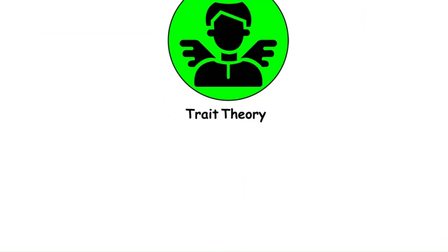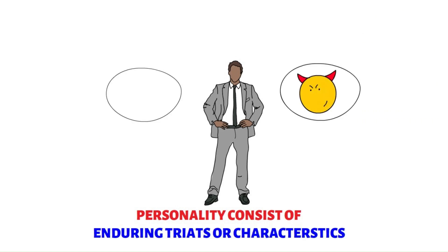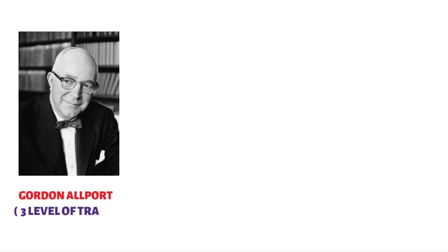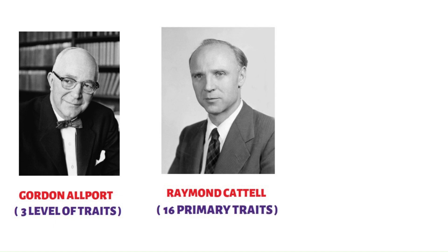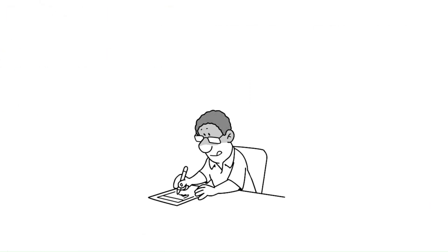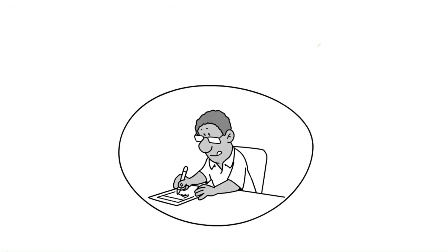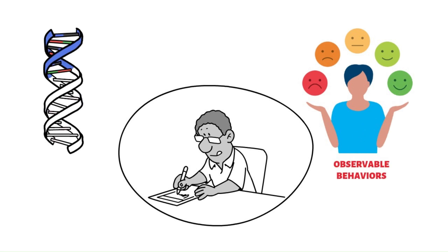Trait Theory proposes that personality consists of enduring traits or characteristics that influence behavior. Gordon Allport identified three levels of traits, Raymond Cattell proposed 16 primary source traits, and Hans Eysenck focused on biological dimensions of personality. Trait theorists seek to categorize and describe personality based on observable behaviors and internal dispositions.